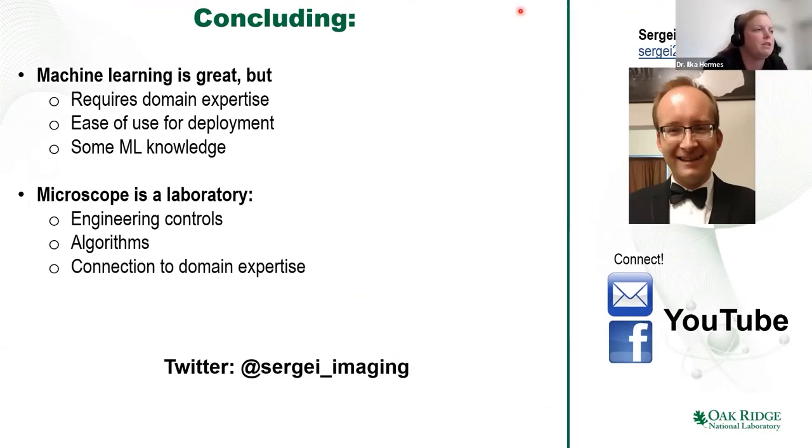Thank you so much — this was really interesting. Is there any technical requirement for the computer to run this? Not as much as you would think. The simple Gaussian process, which is the basic algorithm, is computationally intense — the first time we did it two years ago it required a DGX box. But deep kernel learning and structured Gaussian processes are remarkably light algorithms. In most cases they can run on the GPU inside the microscope — something like a Raspberry Pi or NVIDIA Jetson. So it is not computationally intensive.